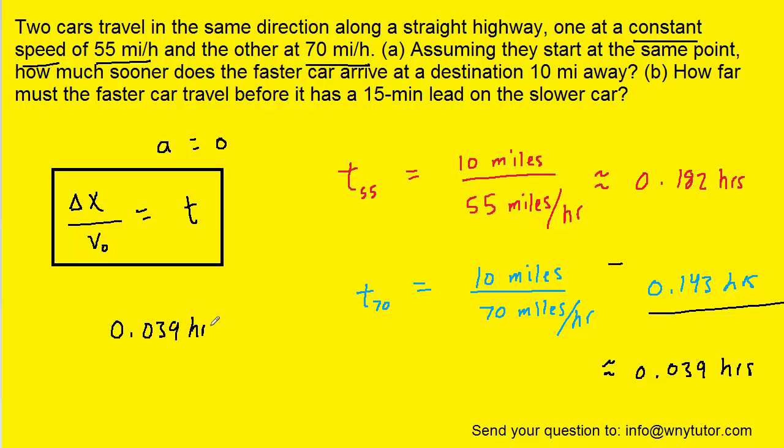We do know that one hour contains 60 minutes. So we could set up the following conversion. And notice by setting it up in this way, the hours in the numerator here and the hours in the denominator there will cancel. And we obtain roughly 2.34 minutes. So that would be how much sooner the faster car arrives at the destination than the slower car.